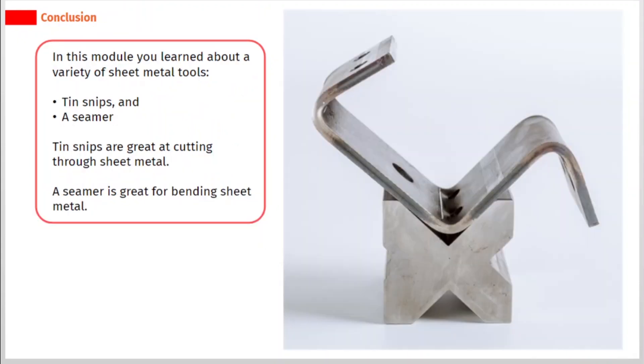In this module you learned about a variety of sheet metal tools, tin snips and a seamer. Tin snips are great at cutting through sheet metal. A seamer is great for bending sheet metal.